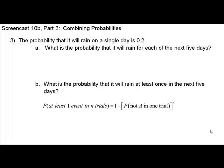Welcome to ScreenCast 10b, Part 2, Combining Probabilities. In this question, we are going to look at the probability that it will rain for five days. In the first scenario, we're going to look at what the probability would be if it rained for each of the next five days, given the fact that the probability it will rain on a single day is 2 tenths.